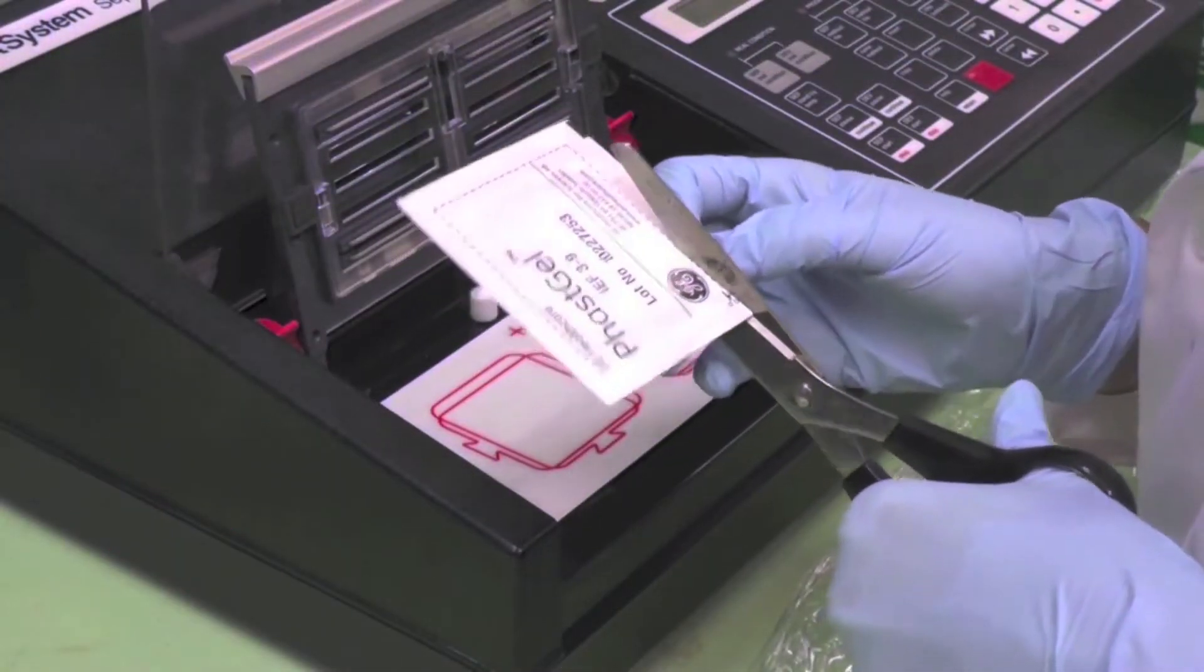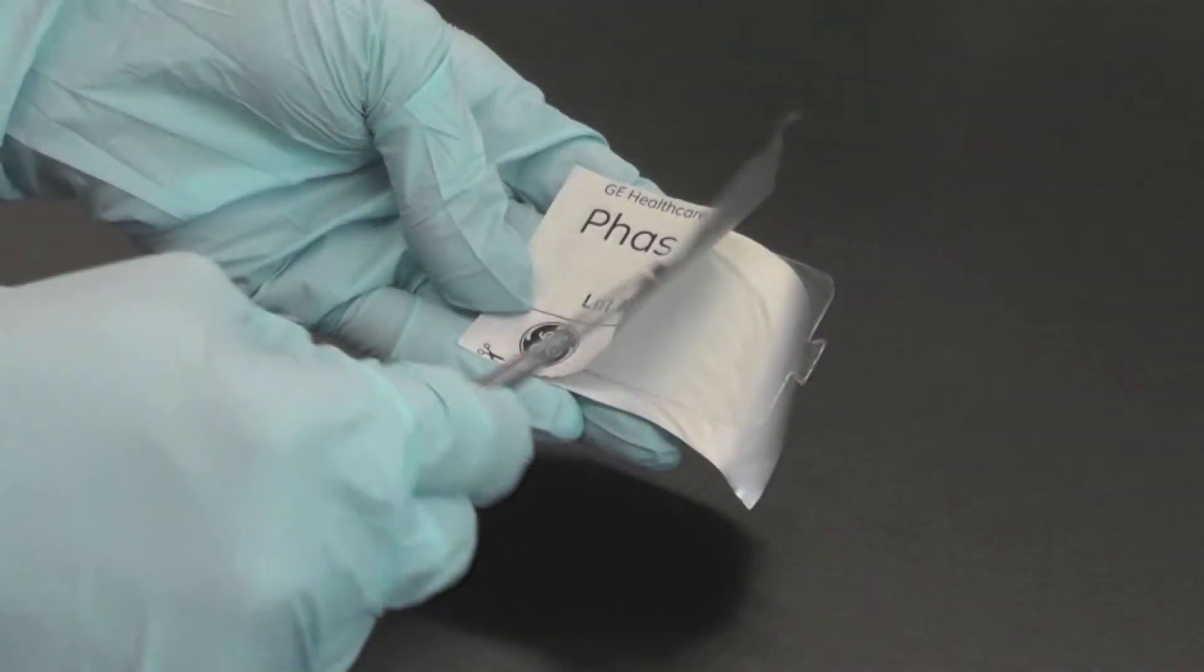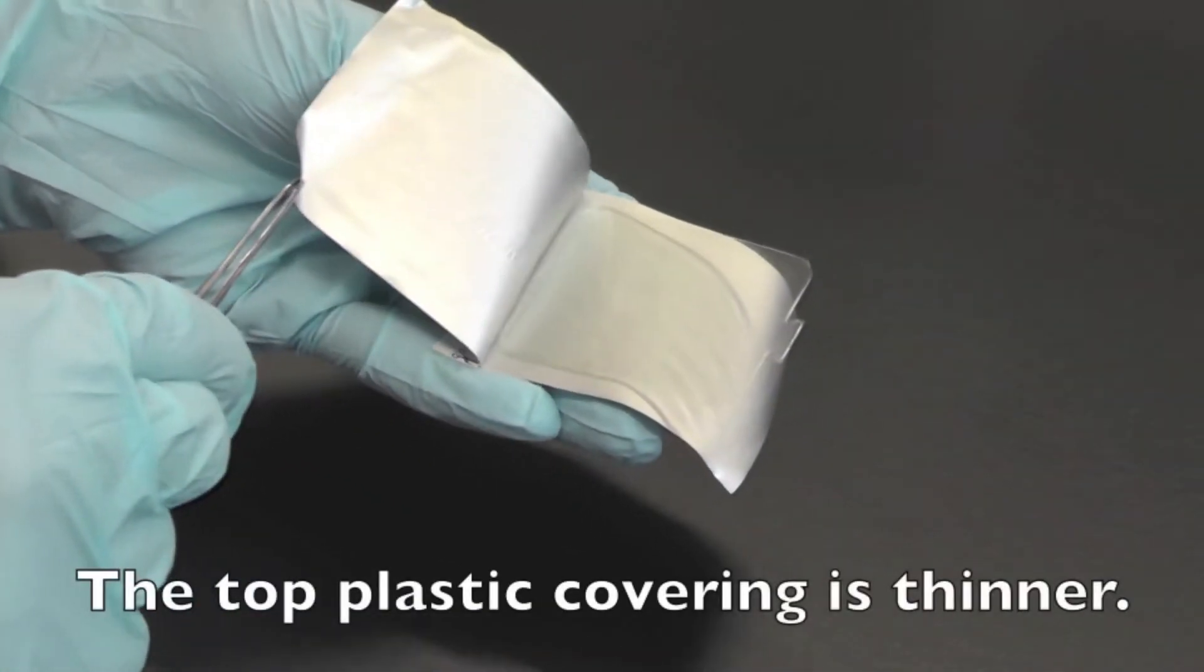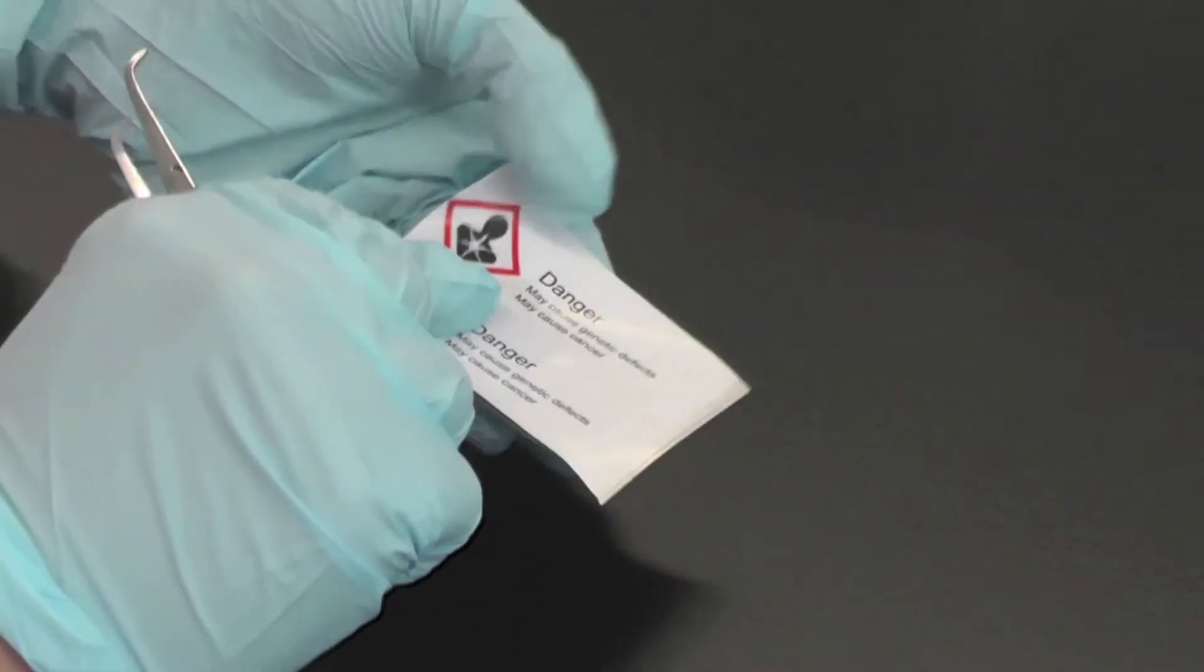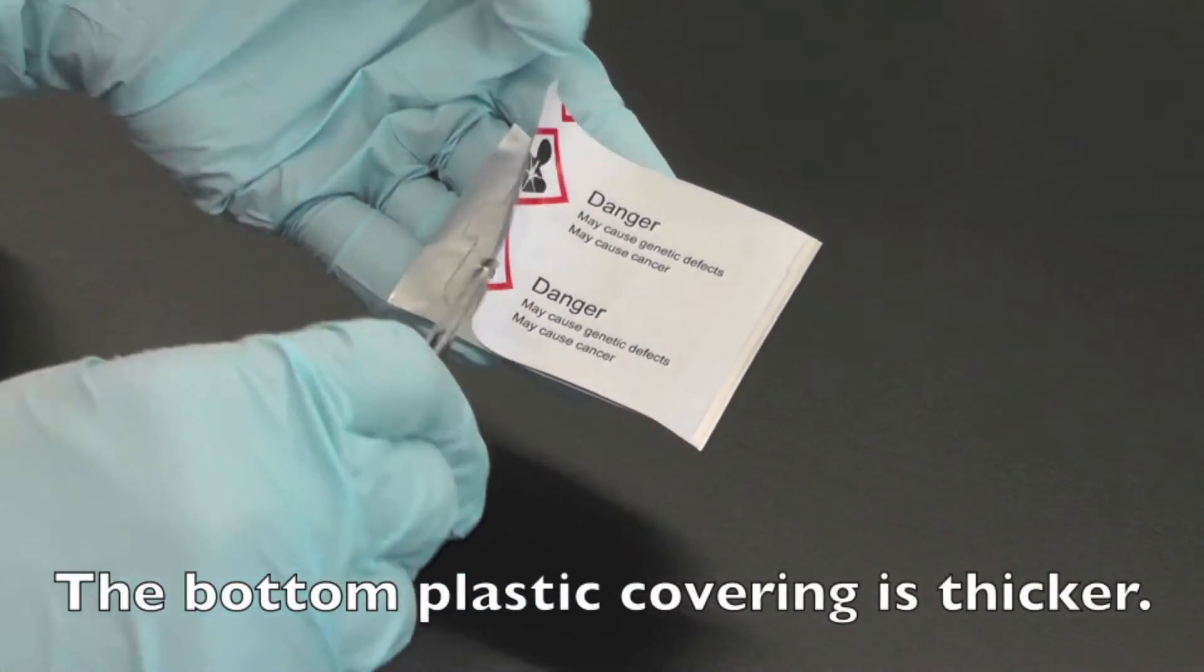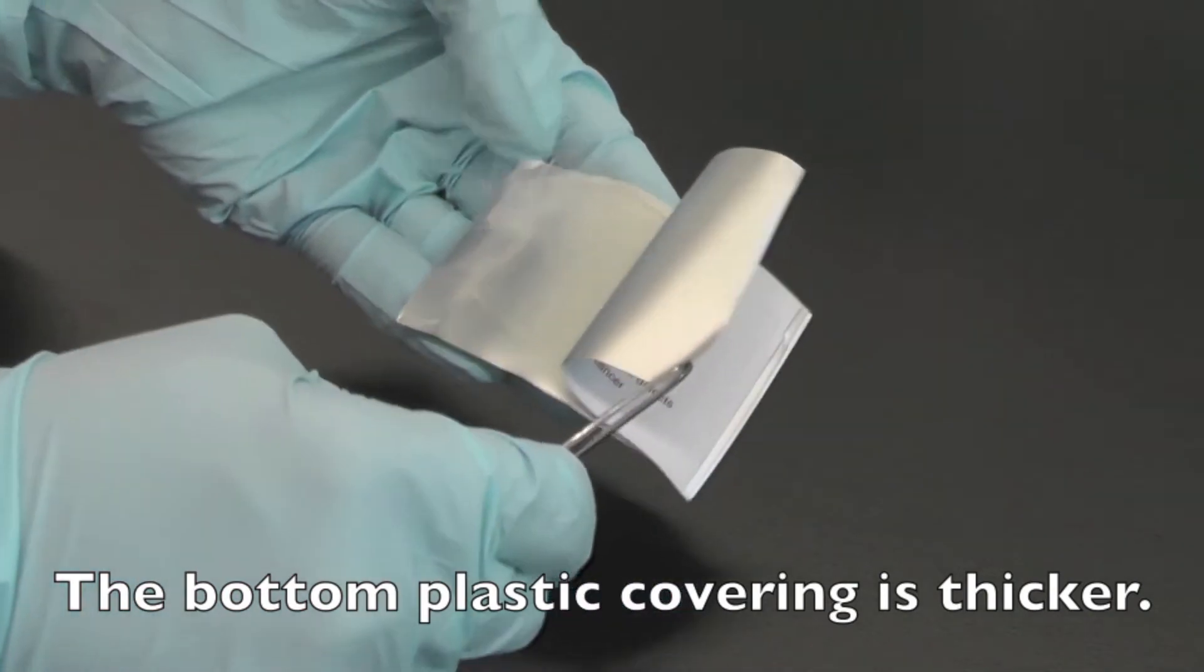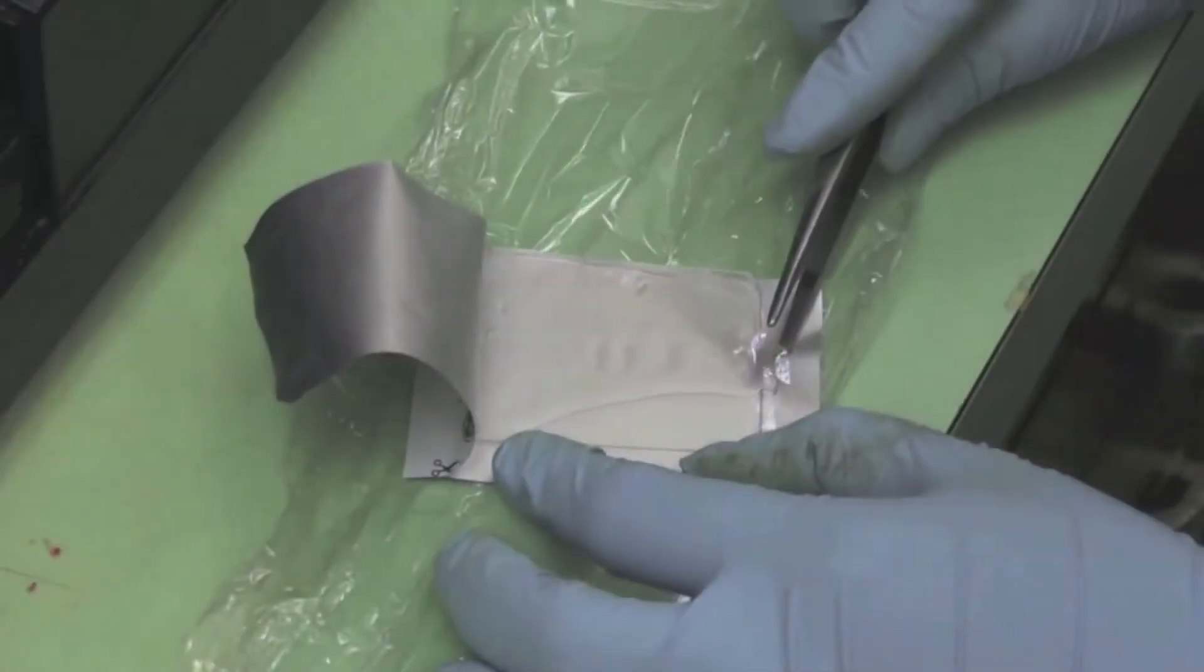Cut open the packaging of the FAST gel IEF. Both sides of the gel are protected by plastic covering. The top plastic cover is much thinner than the bottom plastic. While the thinner top plastic cover is to be removed prior to running the gel, the thicker bottom plastic should stay intact.